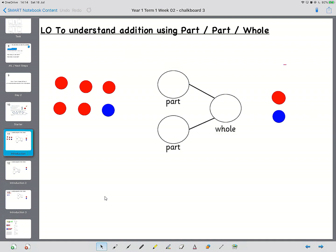Okay so this is a part part whole diagram and it works by identifying the different sections of a sum. So my first question is looking at these here how many red counters are there?